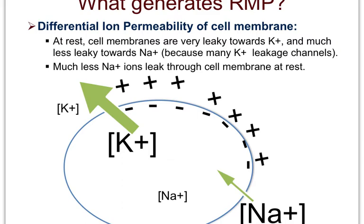If this goes on for a while, aren't we going to lose way too much potassium and gain way too much sodium, eventually disturbing the resting membrane potential? That doesn't happen because something maintains the resting membrane potential so that potassium can continue to leak out and sodium can continue to leak in at different rates along their concentration gradients. The next question is: what maintains the resting membrane potential? The answer is the sodium-potassium pump.